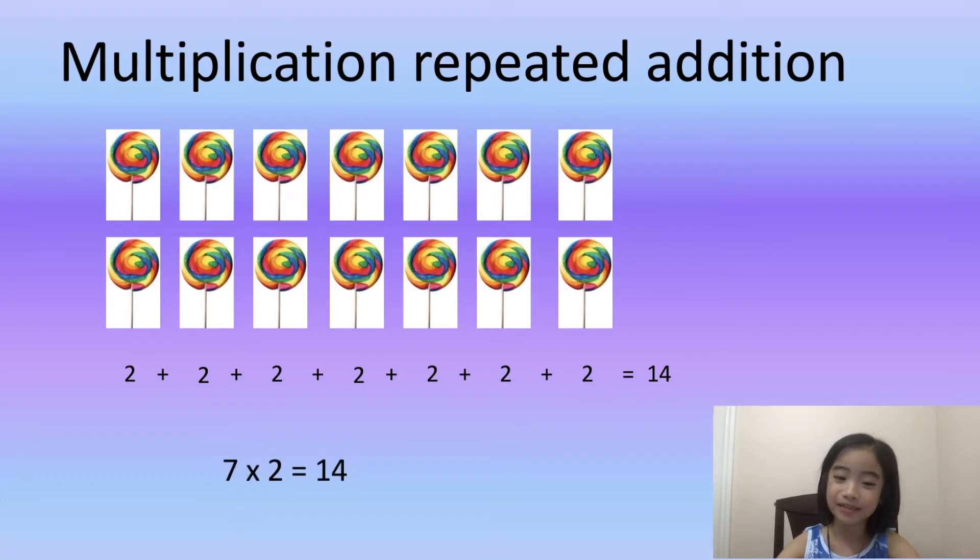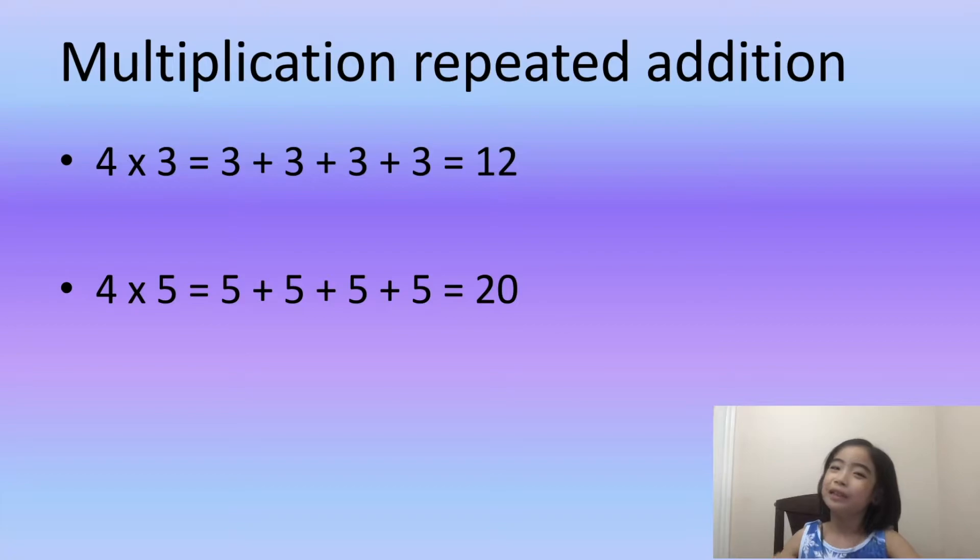Seven times two equals fourteen. Multiplication is actually repeated addition.